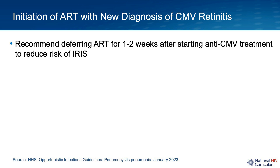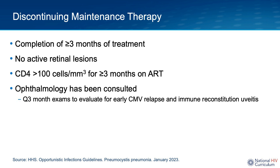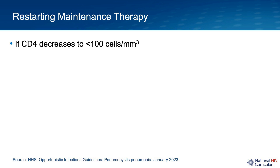The OI guidelines recommend starting ART no later than one to two weeks after starting anti-CMV therapy. Maintenance therapy can be discontinued safely in adults and adolescents with CMV retinitis whose lesions have been treated for at least three to six months, the lesions should be inactive, and the patient should have had sustained increases in T-cell counts to greater than 100 in response to ART. The reactivation of CMV retinitis occurs frequently in patients whose T-cell counts have dropped and whose anti-CMV maintenance therapies have been discontinued, so reinstitution of maintenance therapy should occur if the CD4 count decreases to less than 100.